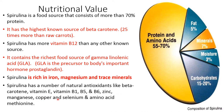Spirulina is the richest source of chlorophyll. It is rich in iron, magnesium, and trace minerals. It has a number of natural antioxidants like beta carotene, vitamin E, vitamins B1, B5, and B6, and minerals like zinc, magnesium, copper, selenium, and the amino acid methionine. It consists of about five percent fat, seven percent mineral, three percent moisture, and around 15 to 20 percent carbohydrate, but the maximum component is protein at about 55 to 70 percent — that is why it is called a single cell protein.